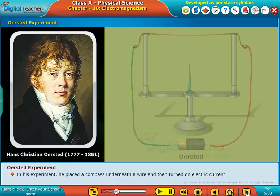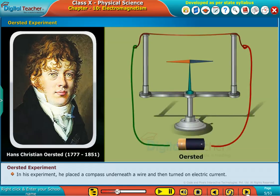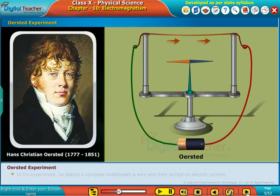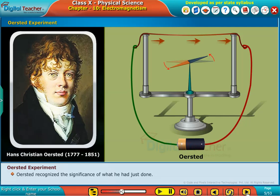In his experiment, he placed a compass underneath a wire and then turned on electric current. The needle of the magnetized compass showed movement. Oersted recognized the significance of what he had just done.